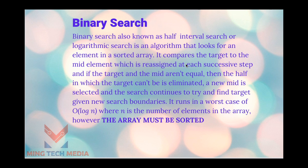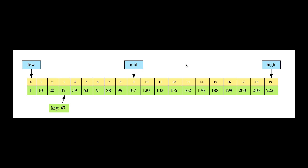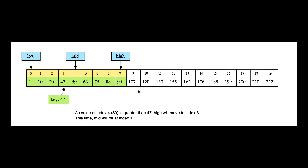One important thing: the array must be sorted. Let's take a look at a visual representation. We're given the key 47 in a 20-element array going up to index 19. Low is at index zero, high is at index 19, and nine is our mid. The algorithm is searching for 47, which is at index three. We check the mid and ask: is this element, 107, greater or less than 47? Obviously it's greater, so we eliminate the upper half.